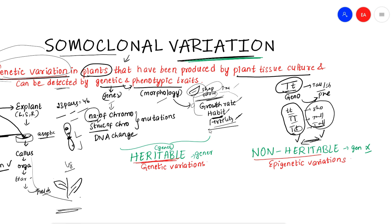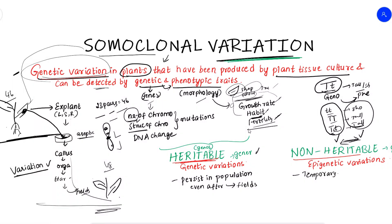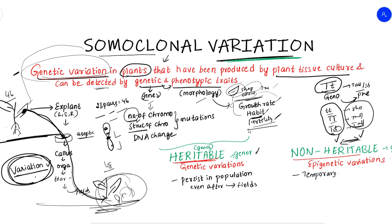The heritable type means variation has been transferred to generations and persisted in the population even after transfer to the fields. The explant is taken, variation arises in tissue culture, and when transferred to the field, the population carries this variation — it persists. This means it is genetic.